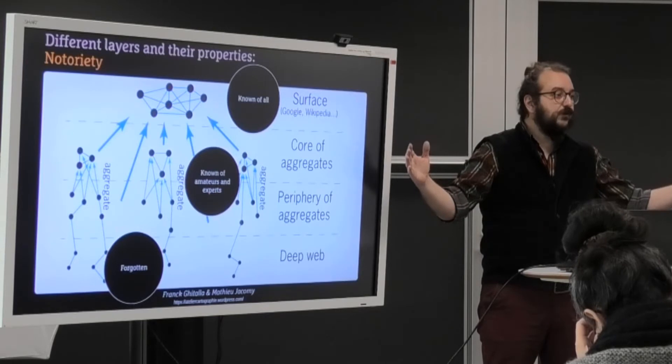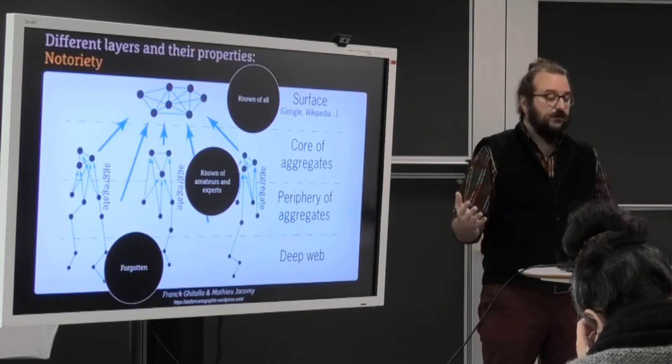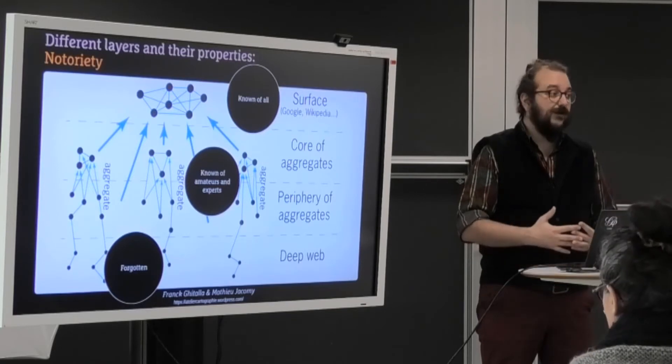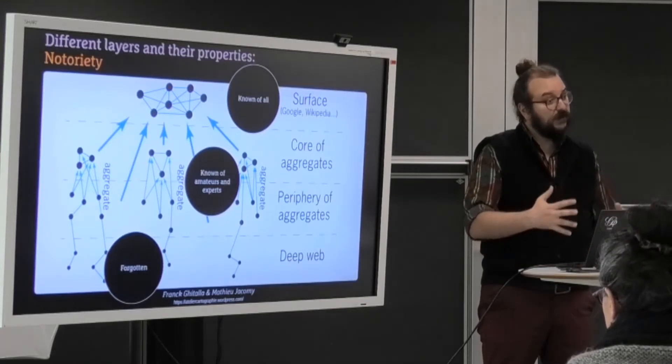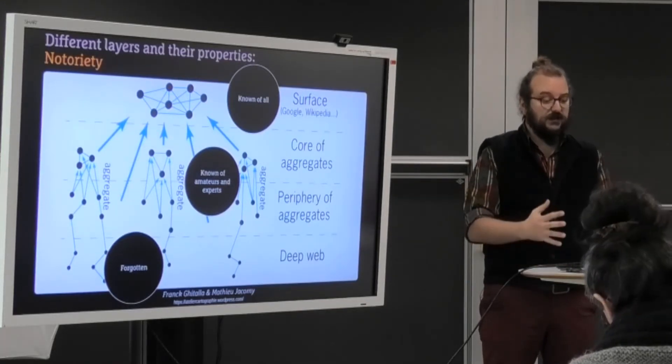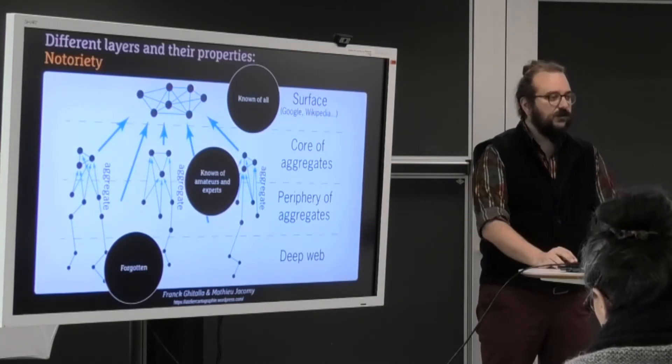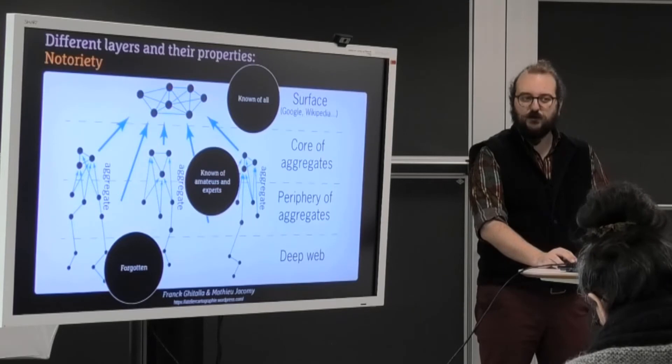It's also a matter of notoriety. So the surface is known of many people. The aggregates are known of amateurs and experts, like people who have this affinity for a given topic. And the deep web is forgotten or wants to not be known and wants to be hidden.